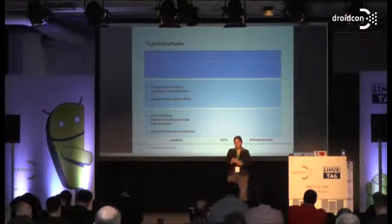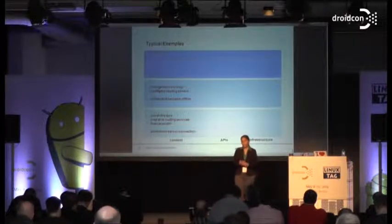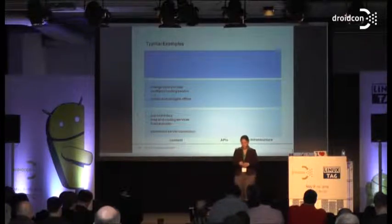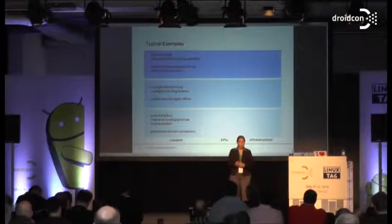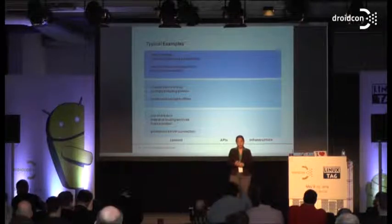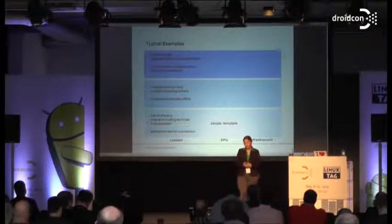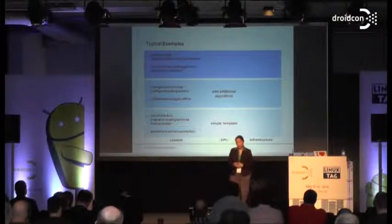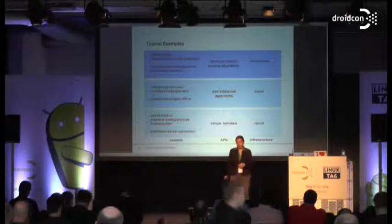Content with low customization: you can change the colors of your map, or configure your routing service — for example, specify your truck's height and weight, or render and navigate offline. Content with high customization: host your own map, edit offline and synchronize when you have a connection, or set up your own routing service with your own network — for example for pedestrian routing or truck routing. With APIs, you can use a simple template from the provider, or with higher customization add additional algorithms or develop your own routing algorithms. Infrastructure ranges from cloud to on-premise.